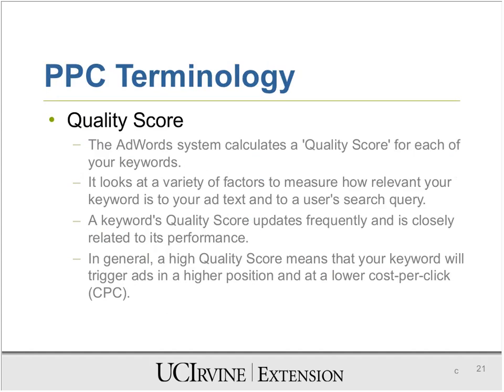There's one more concept I'd like to introduce: quality score. If your quality score is high, you pay less. Quality score is a function of your ad, and also a function of CTR. The higher the CTR, the higher the quality score, and the lower your cost per click. If you make your quality score higher, you'll end up paying less to Google while also getting more traffic and more sales.